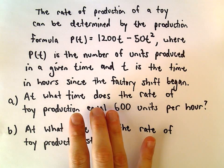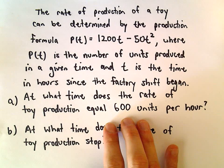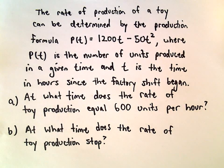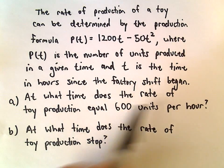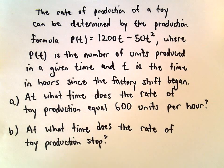We want to figure out: at what time does the rate of toy production equal 600 units per hour, and at what time does the rate of toy production stop? Anytime you see rate of change, the rate of toy production—rates of change have to do with the derivative.